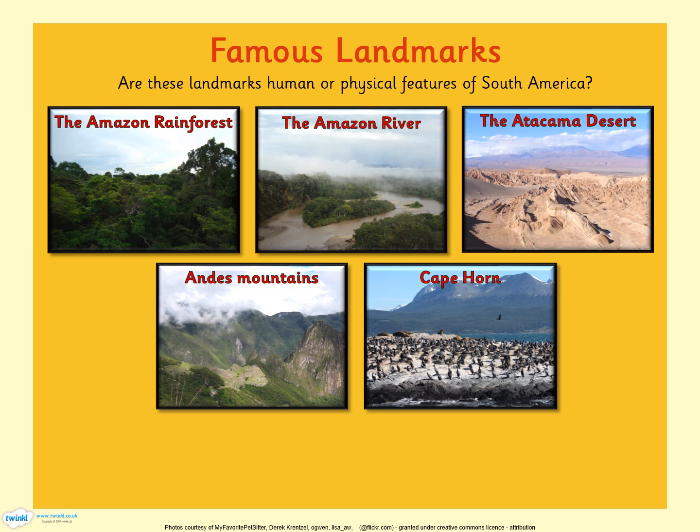So these are some famous landmarks in South America: the Amazon Rainforest, the Amazon River, the Atacama Desert, the Andes Mountains, and Cape Horn. Take a close look at the pictures and decide whether these landmarks are human or physical features. These are physical features — well done if you got that correct. We know that they're physical features because they were not made by humans and they already exist in nature: the rainforests, mountains, and rivers. These are the five main landmarks of South America, and now we're going to take a close look at each one in more detail.